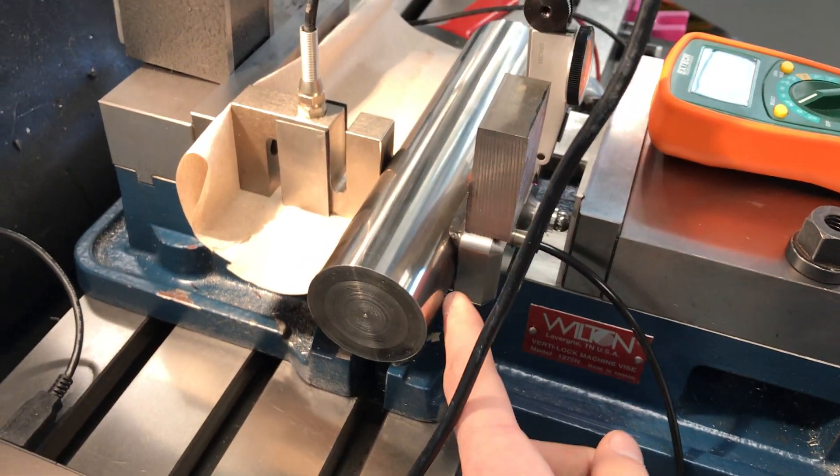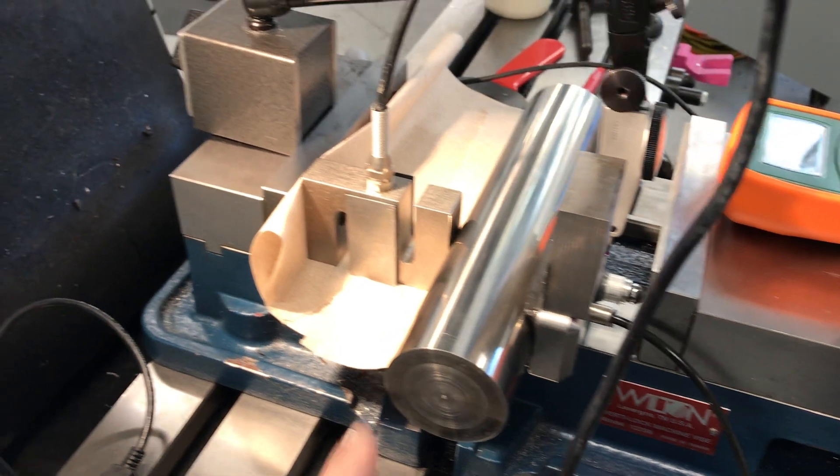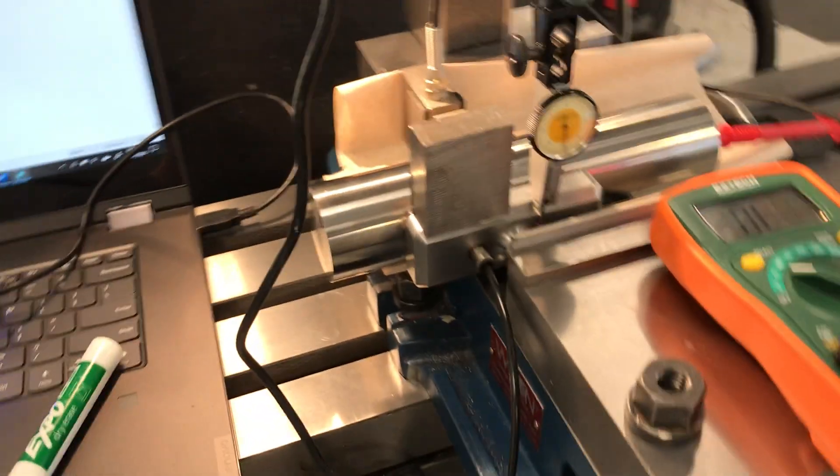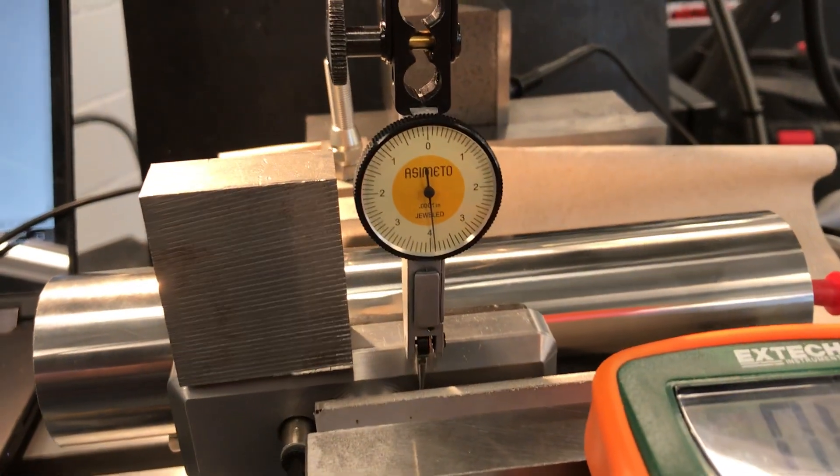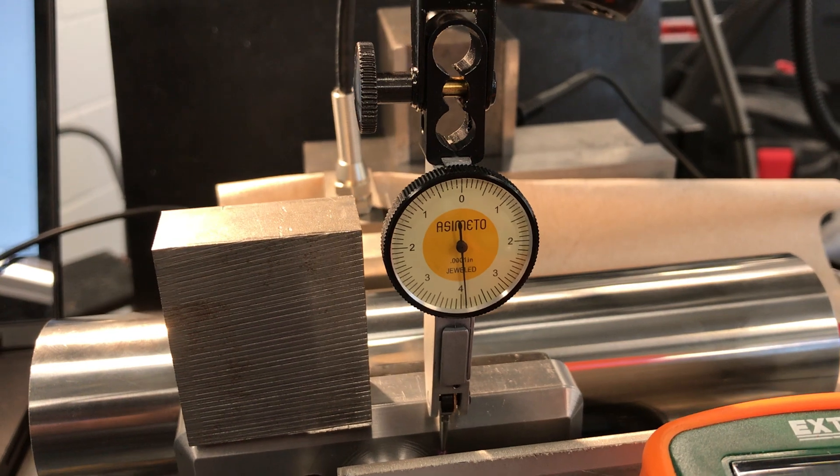Here's our bearing on the shaft with our load cell. Currently sitting around 107 pounds of preload. There's our flight height indicator. Note it's at 3.9 thou.